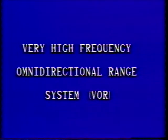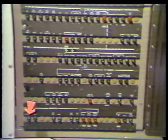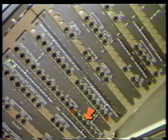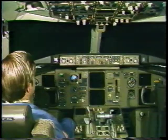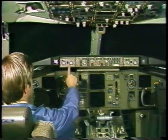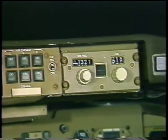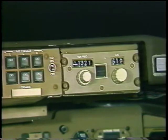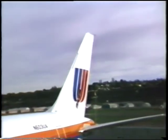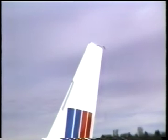The next system to be presented is the Very High Frequency Omnidirectional Range system, or VOR system. Power is provided through the left and right VOR circuit breakers on the P11 panel. The left and right VOR control panels are on each side of the center glare shield panel P55.